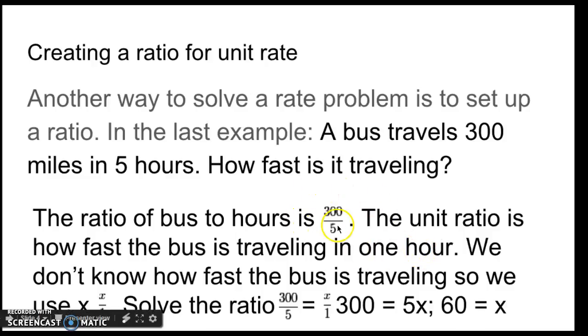So, we know it has a ratio of 300 to five. We want to know the ratio for one hour. But we don't know that. So, we don't know how fast the bus is traveling. So, we use x. Now, that would be x divided by one. So, solve the ratio 300 over five equals x over one. Because if they're proportional, which these are,